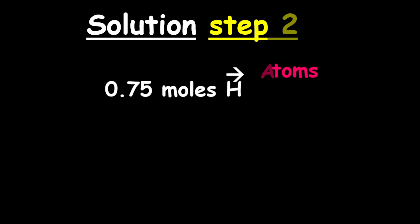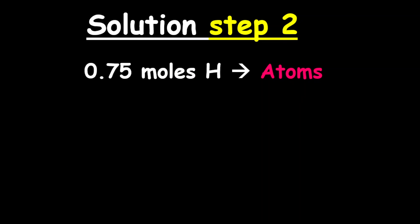So for step 2, we're going to calculate 0.75 moles into atoms. The number of atoms is given as the mole multiplied by Avogadro's number. So therefore, 0.75 multiplied by 6.02 times 10 to the 23.